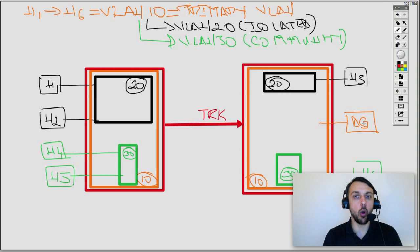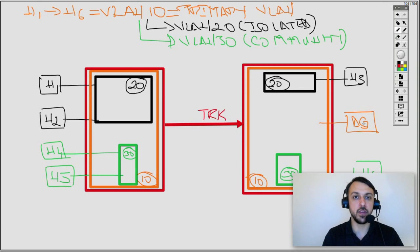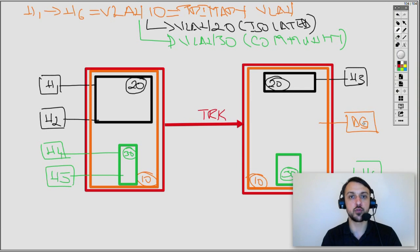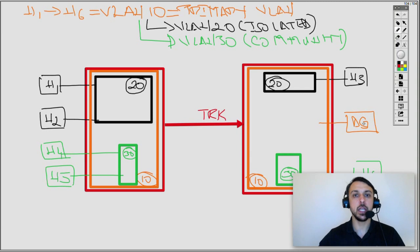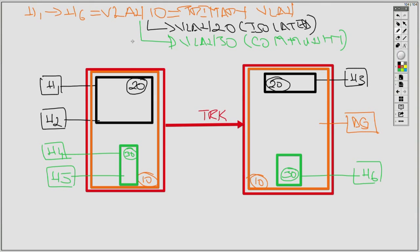I'm using those secondary sub VLANs just to enforce intra-VLAN traffic policies — who can speak with whom in that VLAN. But ultimately, all devices belong to the primary VLAN, which is VLAN 10, because the secondary VLANs are attached to the primary VLAN. That's why the default gateway is connected as a promiscuous port, so everybody can connect to it and send and receive traffic out of the VLAN. Hopefully that makes much more sense now.